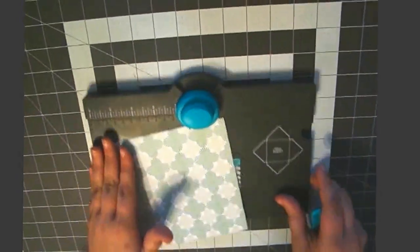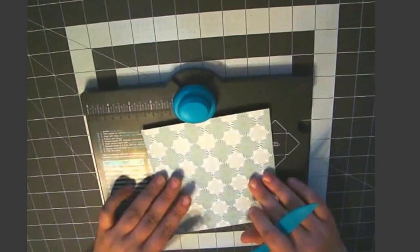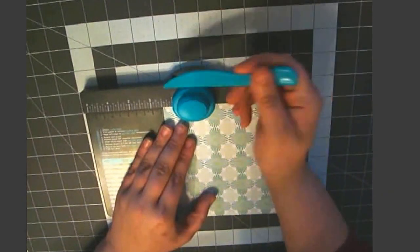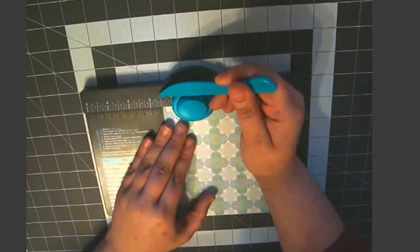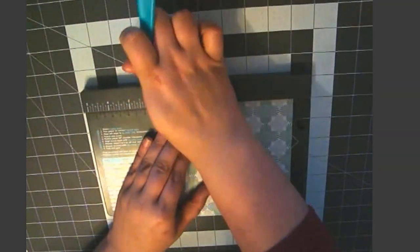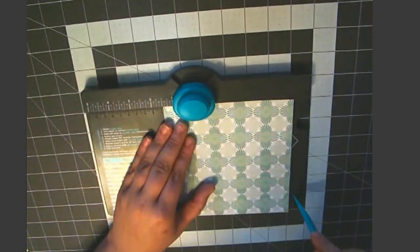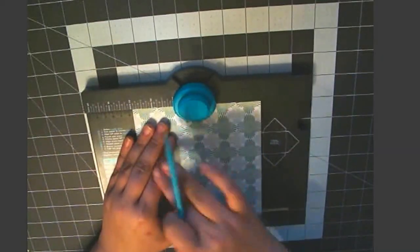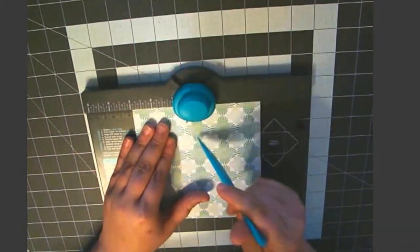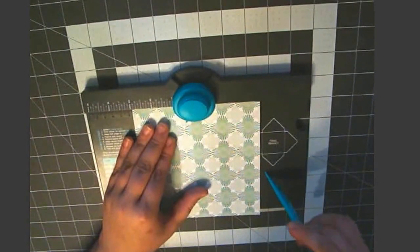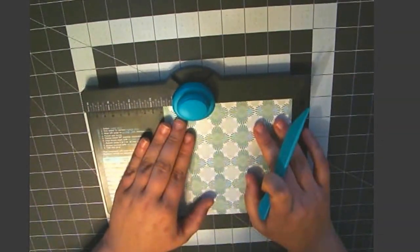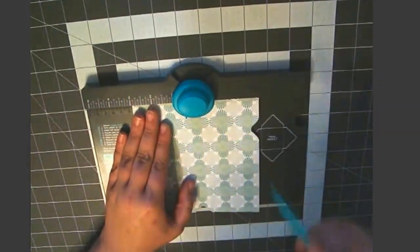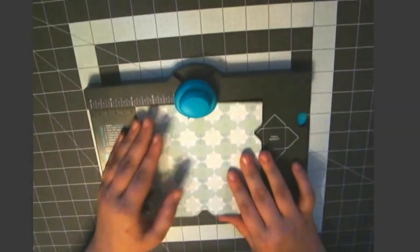You do need an envelope punch board, either like the Stampin' Up one or this one is the We R Memory Keepers. You just want to put it to one and a half or 3.8 centimeters, and you want to punch and score, rotate it, move it over to 3 inches which is 7.6 centimeters and punch and score, and again back to one and a half punch and score, and back to three inches. All right, so that's all the scoring that you need to do.